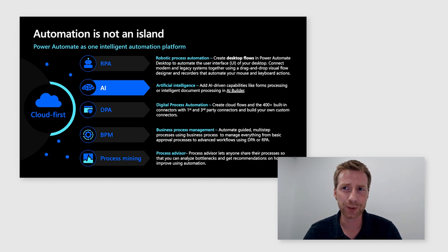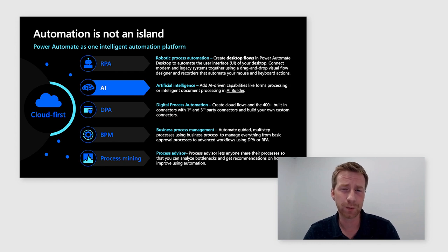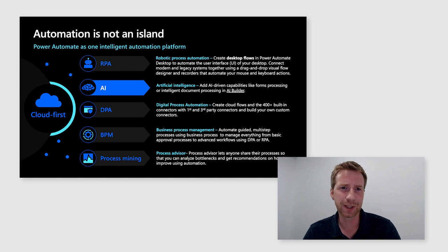Power Automate brings together cloud-first automation with multiple core capabilities to create a comprehensive and connected hyper-automation platform. It includes Robotic Process Automation, or RPA, which is UI-based automation to automate activities on your desktop with desktop flows. It also includes artificial intelligence or AI-driven capabilities, like Intelligent Document Processing that we'll be focusing on today, as well as Digital Process Automation, or DPA, to automate cloud-based processes across native and third-party apps using the Connectors ecosystem.